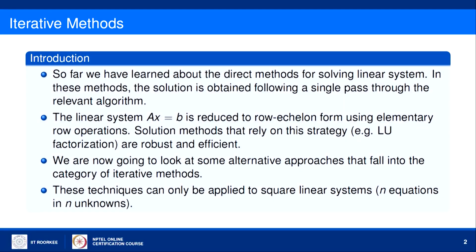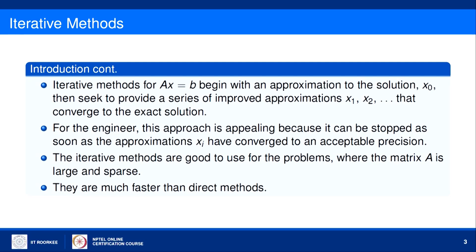In the category of Iterative Methods we can solve a square linear system, meaning we have N equations in N unknowns. Iterative Methods for Ax = B begin with an approximation to the solution x₀, which is the initial solution, and then seek to provide a series of improved approximations x₁, x₂, and so on, that converge to the exact solution. These iterative methods are quite popular in engineering because we look for approximations, and once we have a required precision — a marginal error between the exact solution and the sequence of approximations — we can stop, saving computation time.